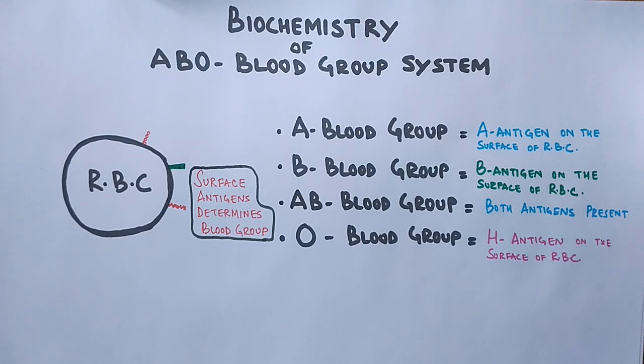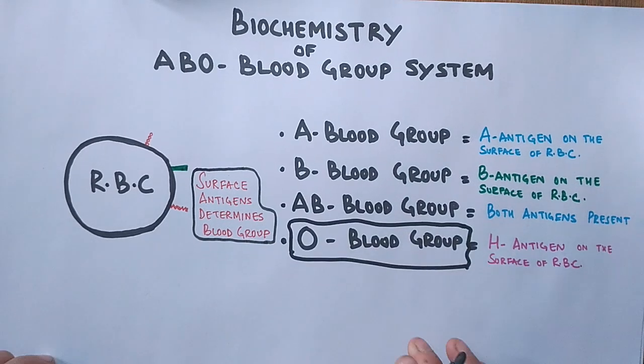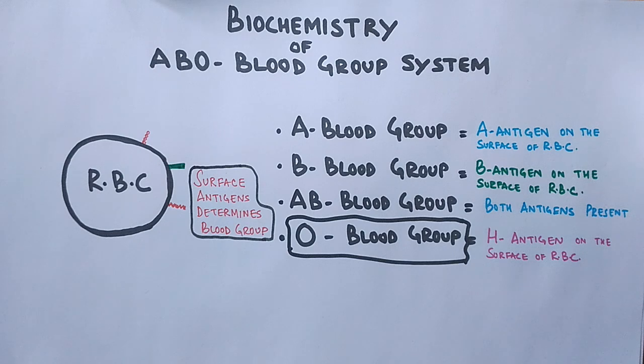Do not get confused that maybe sometimes you might have heard that O individuals lack any antigen on RBCs. It is because the O individuals have null alleles and do not go for any addition of molecules on the precursor molecule which is already present here in the form of H antigen.